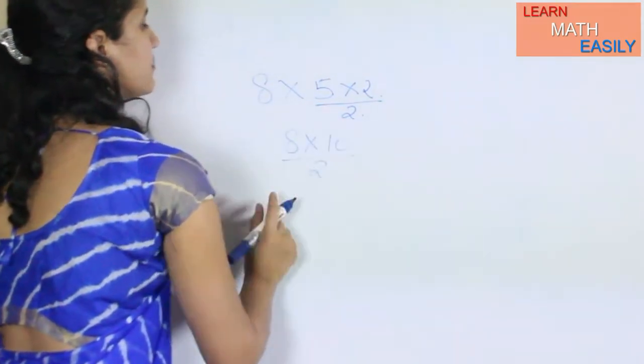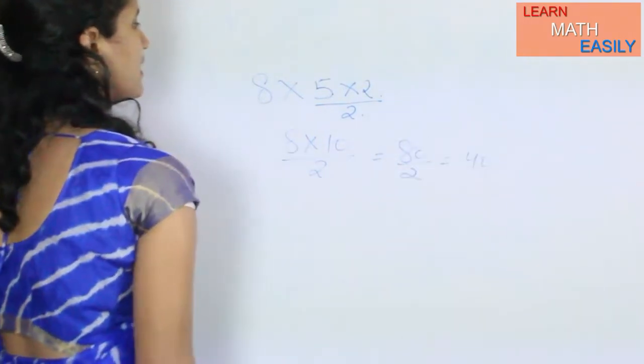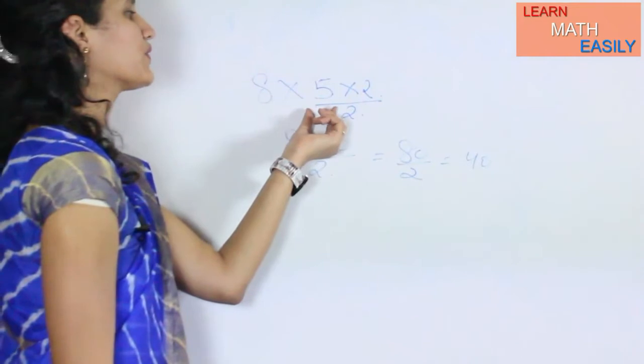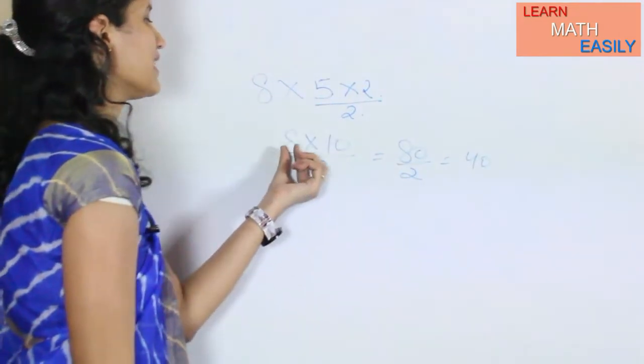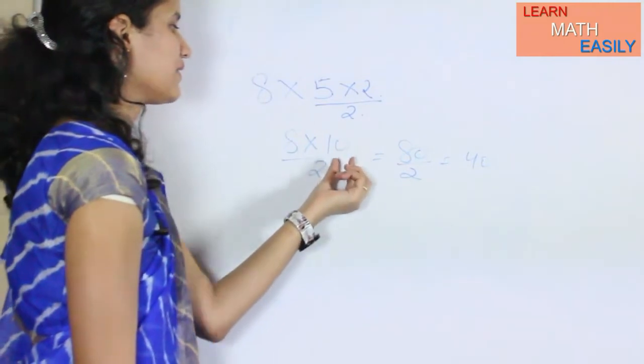80 divided by 2 is equal to 40. Here, instead of multiplying with 5, I am multiplying it with 10 and dividing it by 2, because 10 divided by 2 is nothing but 5. So my answer is 40.